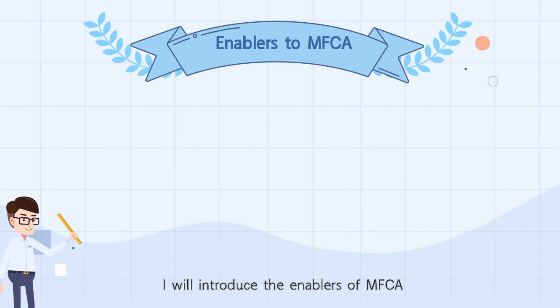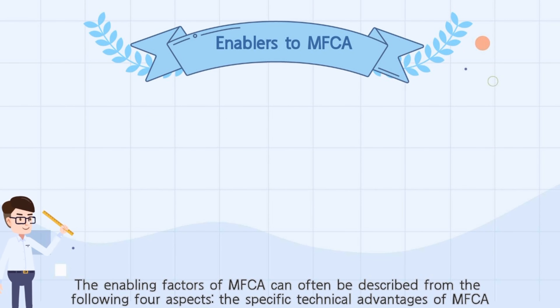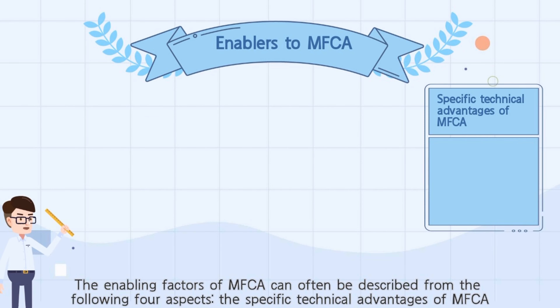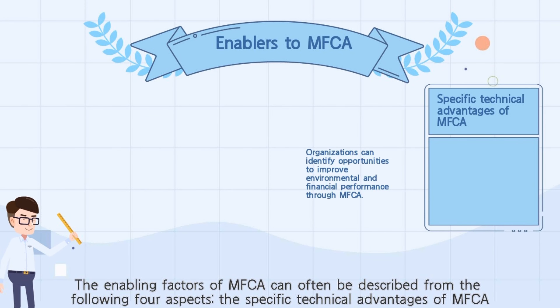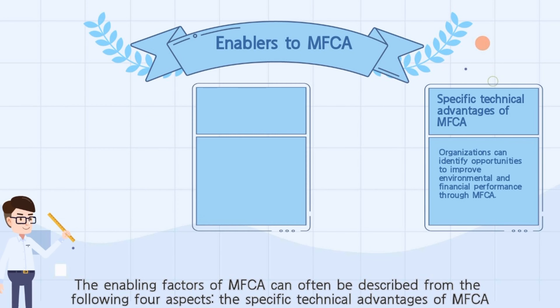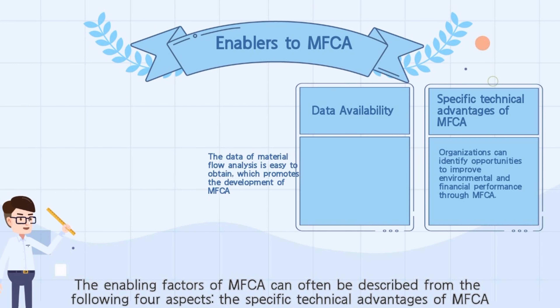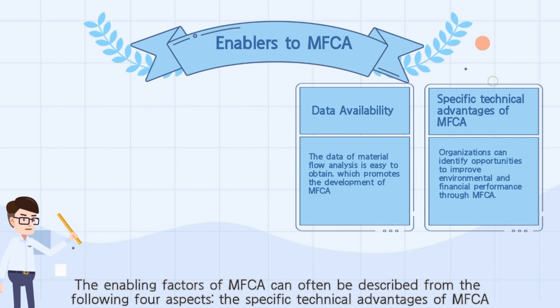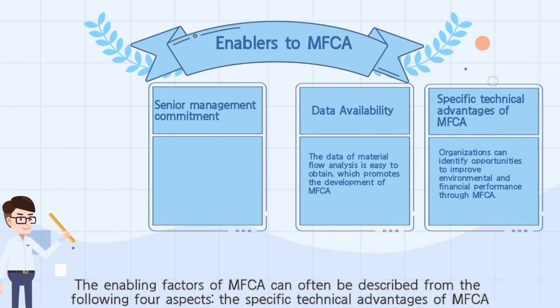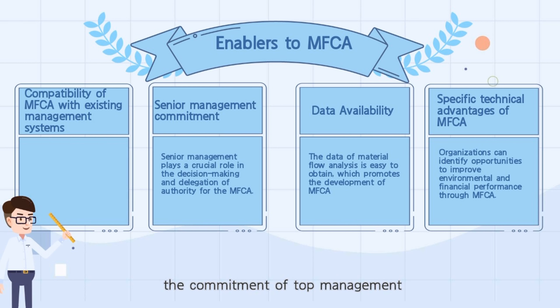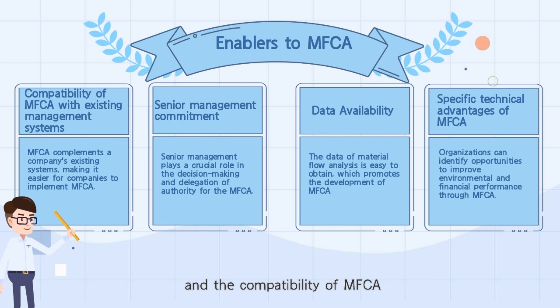Now I will introduce the enablers of MFCA. The enabling factors of MFCA can often be described from four aspects: the specific technical advantages of MFCA, the availability of data, the commitment of top management, and the compatibility of MFCA.